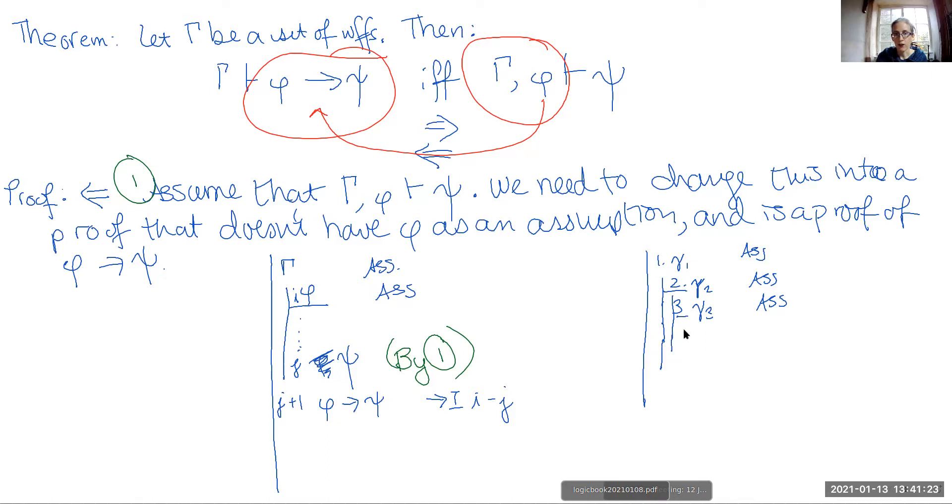And then we've got our extra one here. At line four, we have phi. Then what our assumption here says is that at some point you get psi.